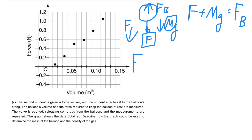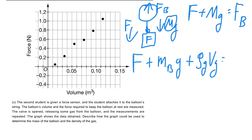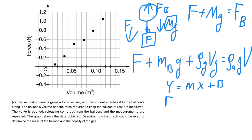Breaking it down: F + m_balloon × g + ρ_gas × V × g = ρ_air × g × V. Since we have a line, we want to rearrange this into the form y = mx + b. Here y is our force F, m is our slope, x is volume V, and b is our y-intercept. We want to rearrange the equation into this form so we can analyze it from the graph.